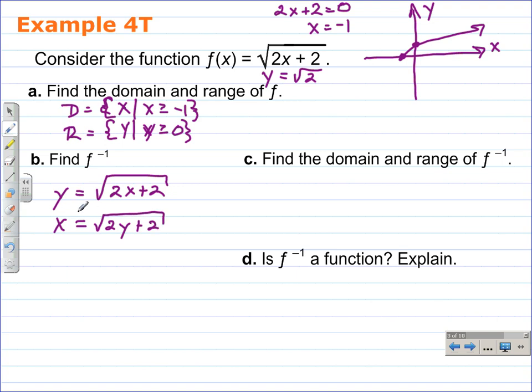At this point, we want to square both sides. Squaring this side just gives us x squared. On the right-hand side, squaring a square root gives us 2y plus 2. It gives us the radicand. We'll subtract 2 from both sides here. And finally, we'll divide both sides by 2.